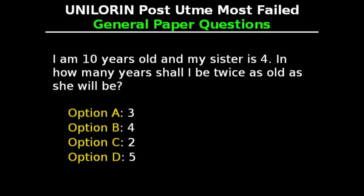General Paper Questions. This question says: I am 10 years old and my sister is 4. In how many years shall I be twice as old as she will be? Option A: 3, Option B: 4, Option C: 2, Option D: 5.